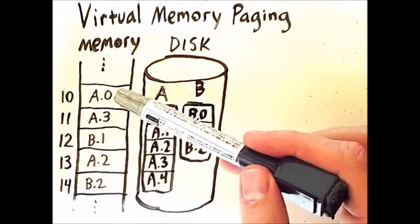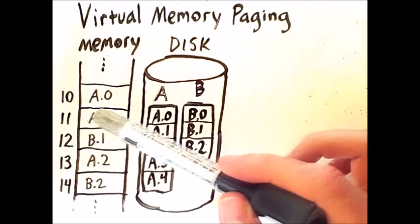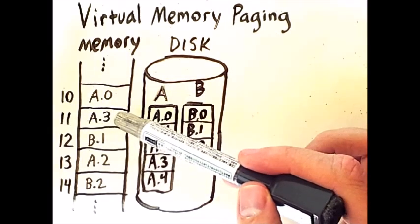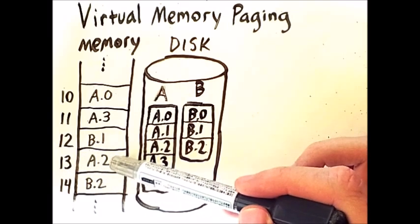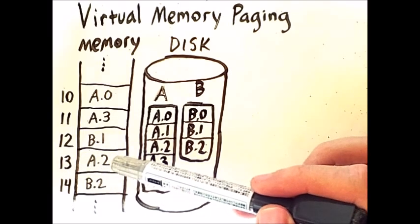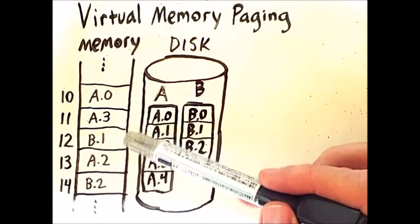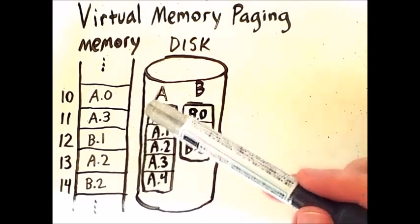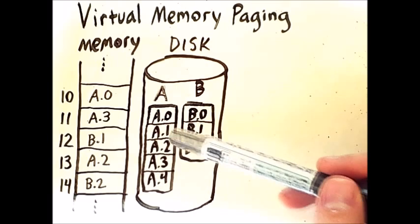Frame 10 contains page A0 and frame 11 contains page A3. Later at frame 13 I have page A2. So I have three pages of process A. They are not stored in order and not all are present. I am missing A4 and A1.